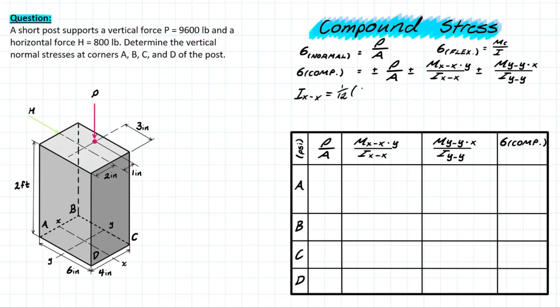1 over 12 and we have the base which is 6 inches and then the height which would be 4 inches. And solving that you are going to be left with 32 inches to the power of 4.